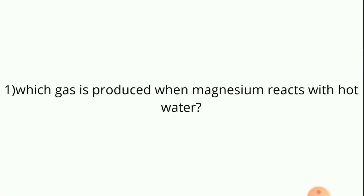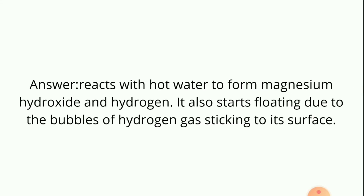First question: which gas is produced when magnesium reacts with hot water? Answer: it reacts with hot water to form magnesium hydroxide and hydrogen. It also starts floating due to the bubbles of hydrogen gas sticking to its surface.